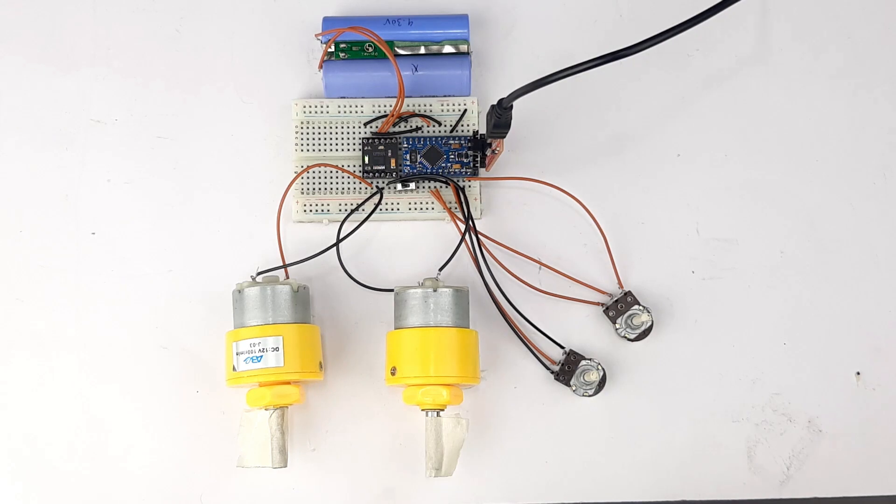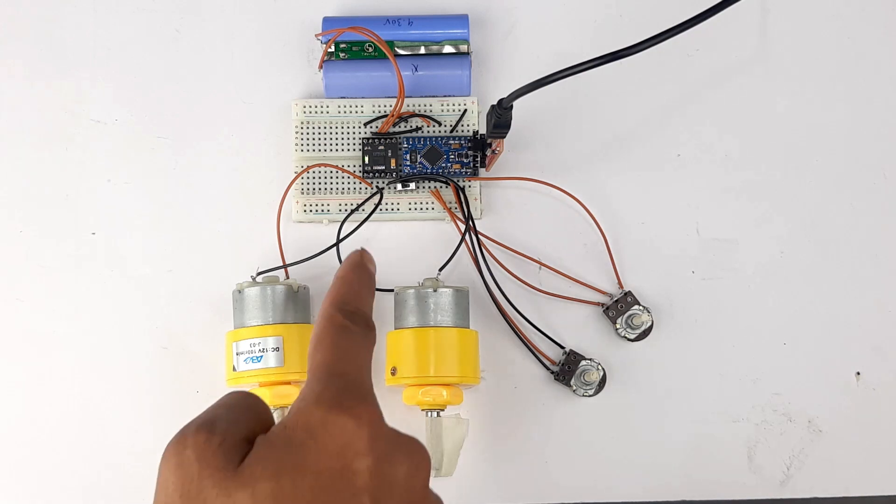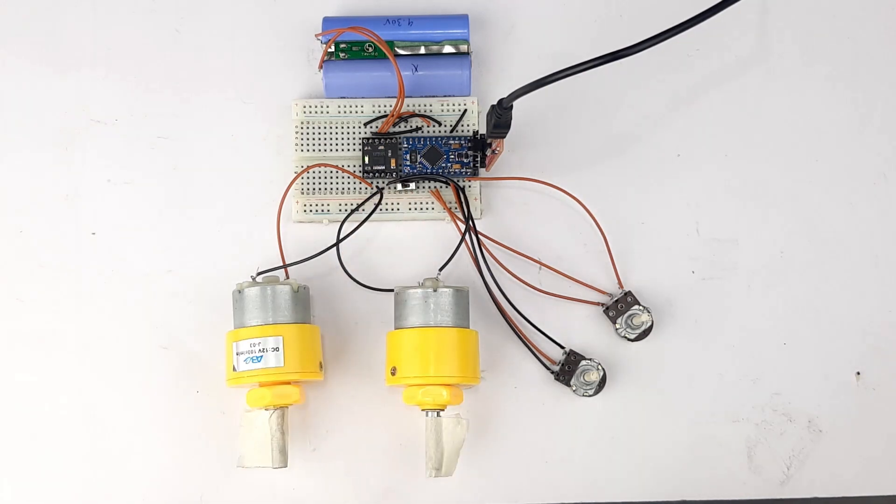So this is the setup and we have two potentiometers to control the speed of these two motors and we have a switch to change the direction of the motor. So let me power it up and show you how the circuit works.